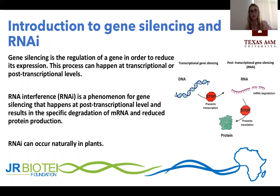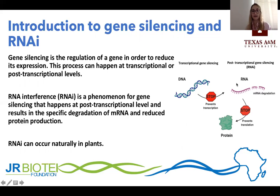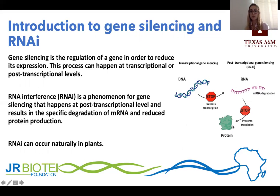So what is gene silencing? Gene silencing is basically the regulation of a gene in order to reduce its expression. Gene silencing can happen at both the transcriptional level with the prevention of DNA transcription to RNA, or it can happen at a post-transcriptional level with both mRNA degradation and the repression of its translation to a protein.